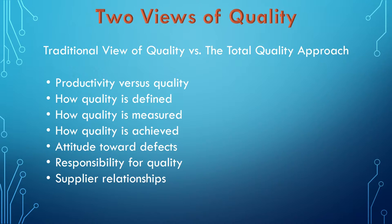One of the things I particularly like is the responsibility for quality. The traditional view is that employees are blamed for poor quality, whereas in the total quality view, at least 85% of quality problems are management's fault. So in these views of quality, a lot of responsibility goes to management. In the same token, employees are expected to do a lot more nowadays than in the past. The key point is that there are very significant differences between the traditional view of quality and the total quality approach.